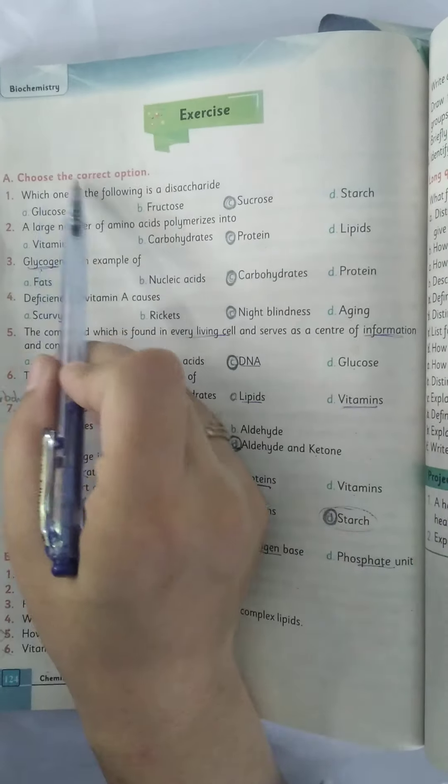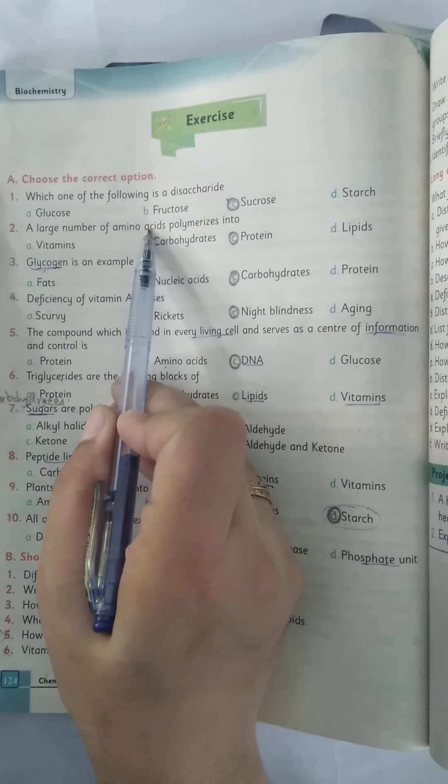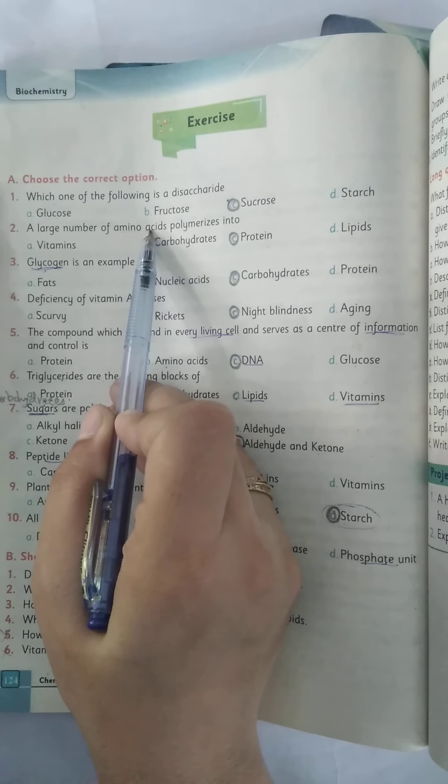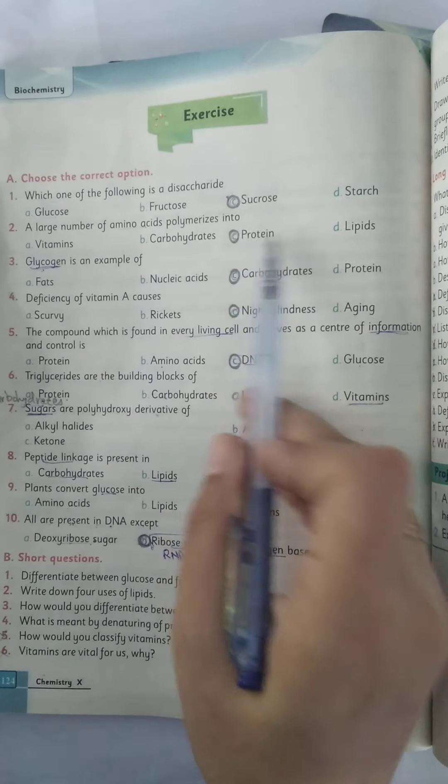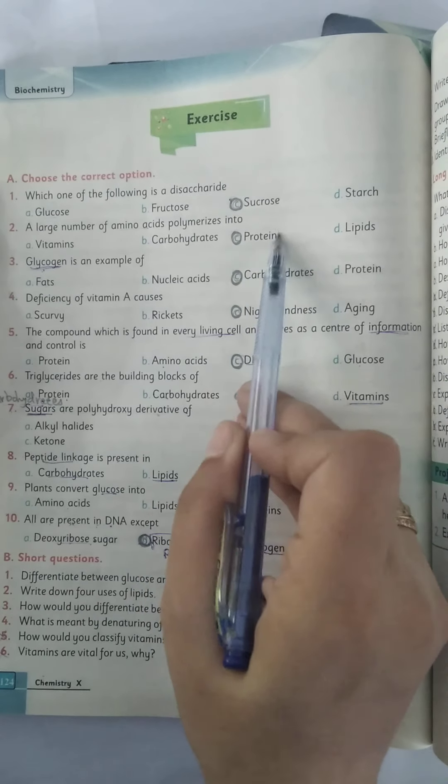A large number of amino acids polymerizes into... As we know that amino acids are the building blocks of proteins. The options are vitamins, carbohydrates, proteins, lipids, and the correct option is proteins.